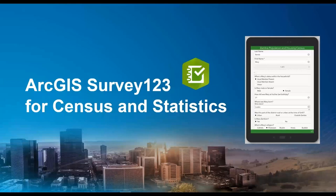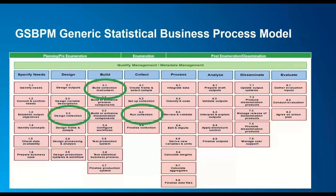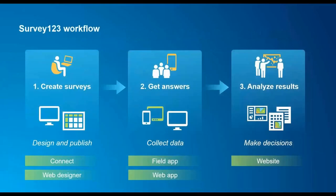Survey123 really is a complete form-centric system for your organization. I want to touch on the generic statistical business process model for a moment, because we're often tasked with key functions to prepare for collection in the field — not only designing our database and frame, but designing the collection, building the instrument, and running the collection. Survey123 can help in many ways in this process, providing tools to create the survey instrument, collect the data, get answers, monitor the process, analyze results, and even help make decisions in near real time — perhaps making adjustments where enumerators are having difficulty getting anticipated response levels.